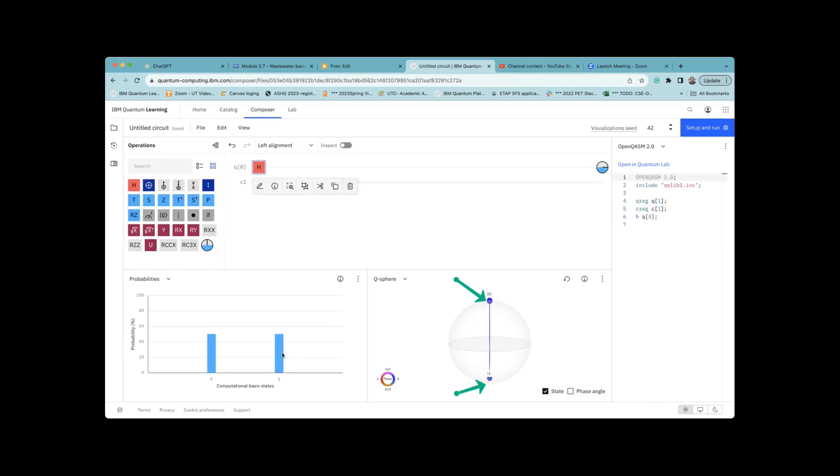In the Q sphere at the bottom right, we can see now there are two states that are superpositioned, 50-50 chance each.